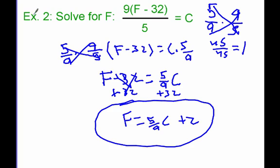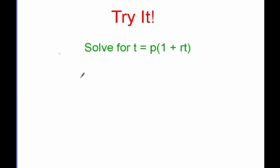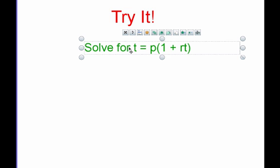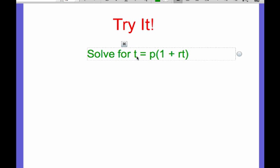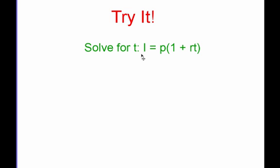I'm now going to leave you with a try-it problem. Solve for t in the equation i equals p times (1 plus rt). So the equation is i equals p times 1 plus rt, and you need to solve for t.